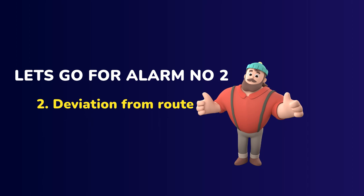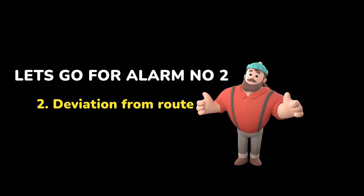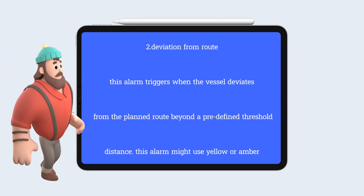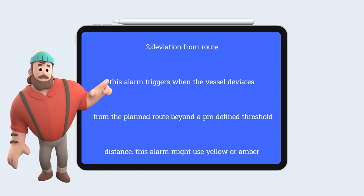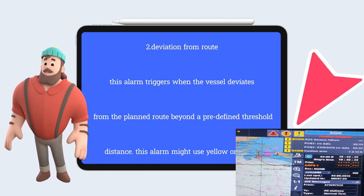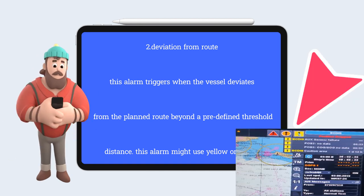2. Deviation from Route. This alarm triggers when the vessel deviates from the planned route beyond a predefined threshold distance.